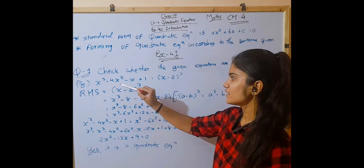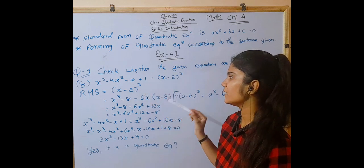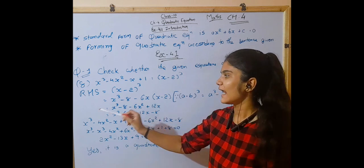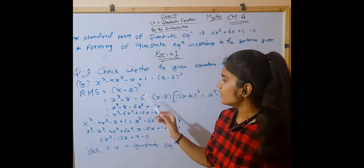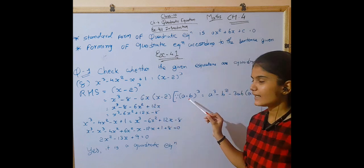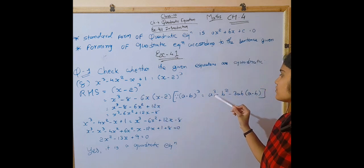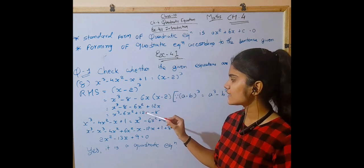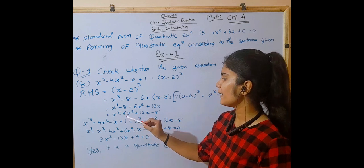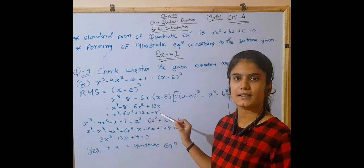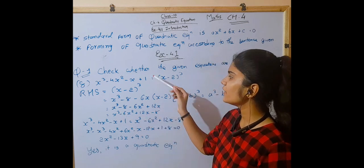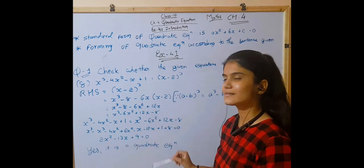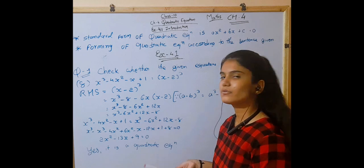Number 8: X³ - 4X² - X + 1 = (X - 2)³. We equate the right-hand side using the identity (A - B)³ = A³ - B³ - 3AB(A - B), giving X³ - 6X² + 12X - 8. Equating both sides together, we get 2X² - 13X + 9 = 0, which is a quadratic equation.